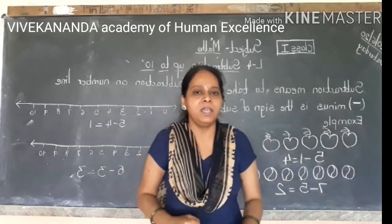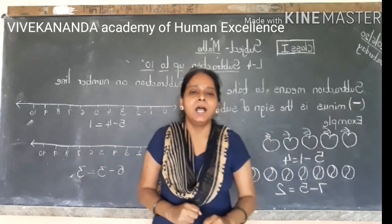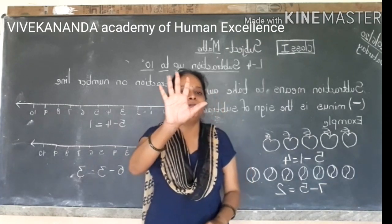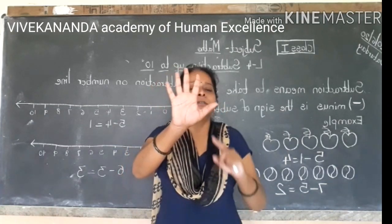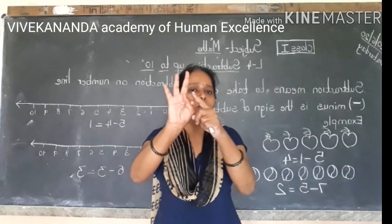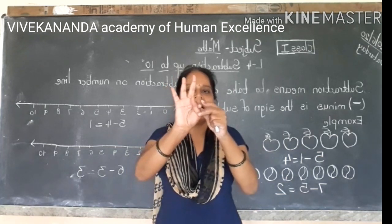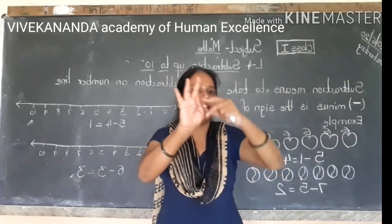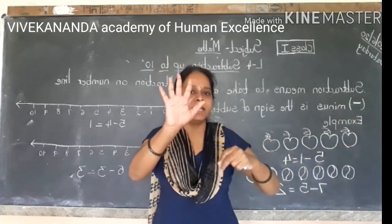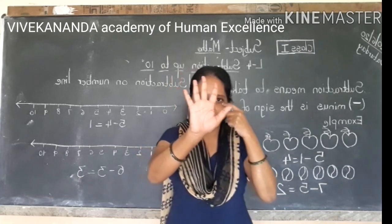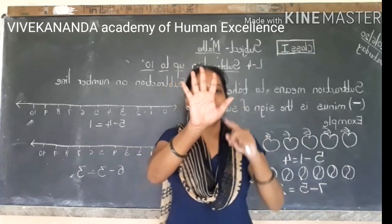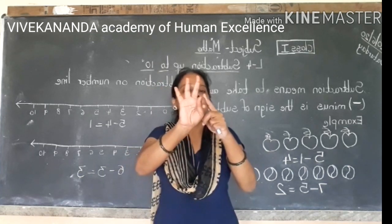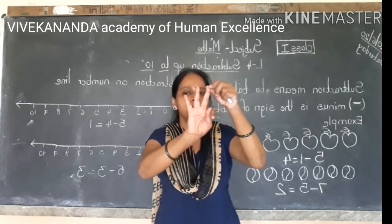I will give you one example. आपके पास five chocolates हैं. Five chocolates में से two chocolates आपके भाई ने आपसे ले लिए. Take away. आपके पास five chocolates थे, उसमें से दो chocolates आपके भाई ने ले लिए. तो आपके पास कितने chocolates बचे?